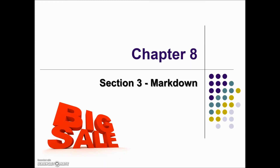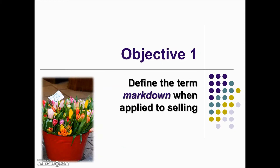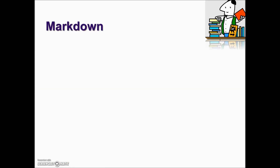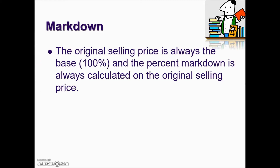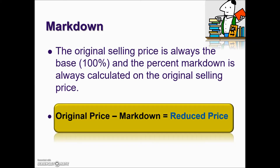In this section we're going to discuss markdowns. Markdowns are used to stimulate sales volume. When merchandise does not sell at its marked price, the price is often reduced. The difference between the original selling price and the reduced selling price is called the markdown, with the selling price after the markdown called the reduced price, sales price, or actual selling price. The basic formula for markdown is: original price minus markdown equals the reduced, sale, or actual selling price.